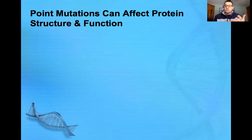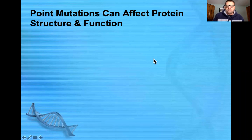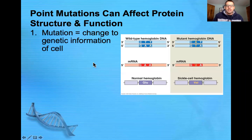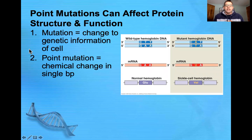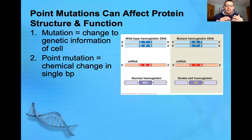The first type of mutation we'll look at are point mutations that can affect protein structure and function. A mutation is simply a change to the genetic information of the cell. A point mutation is a chemical change in a single base pair — at one point in the DNA strand, there is a chemical change to a single base pair.